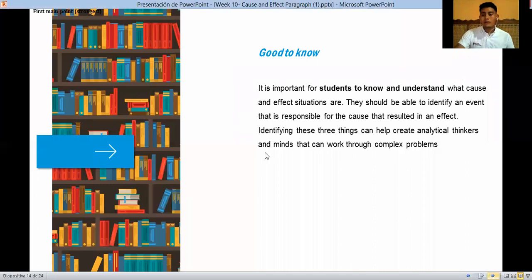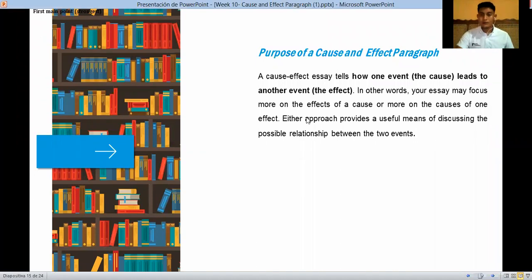And what is the purpose for that paragraph, cause and effects? A cause and effect is a tale of one event, the cause, right, led to another event that is the effect that you do and what you find for that. In other words, it may focus more on effects than a cause or more on the cause of one effect. You can mention one effect and a lot of causes or one cause and a lot of effects. Either approach provides a useful means of discussing the possible relationship between two events. Yes, remember, that is focus on two events, cause and effect.